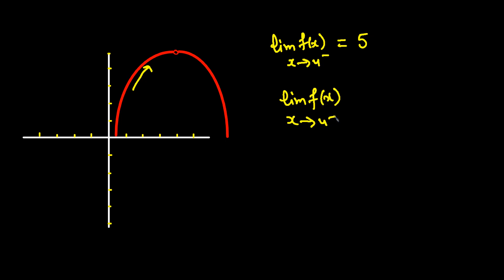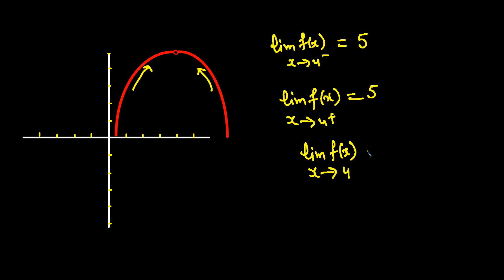Now the limit of f of x as x approaches 4 from the right-hand side — again we arrive at the same point. There is a hole there, and the function value is again 5. Since both sides match, the limit as x approaches 4 is equal to 5. However, the value of the function at x=4 does not exist because there is a hole there.